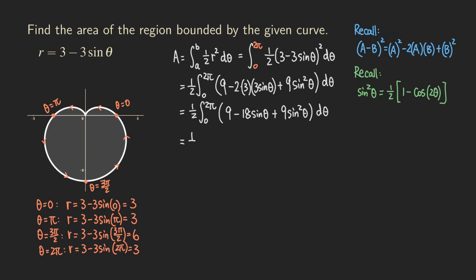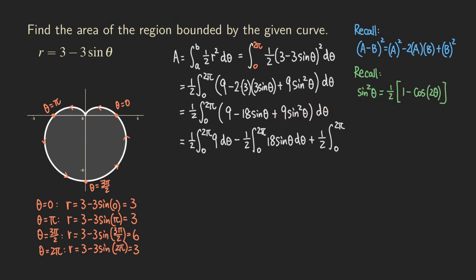We break the integral into separate parts. The first is one half times the integral from 0 to 2π of 9 d-theta. The second is minus one half times the integral from 0 to 2π of 18 sine theta d-theta. For the third, we apply the half-angle formula: one half times the integral from 0 to 2π of 9 times one half times (1 minus cosine 2 theta) d-theta. The setup is the more interesting part — the calculation is tedious.